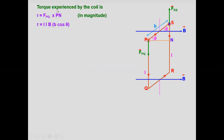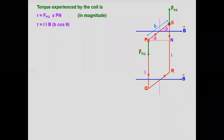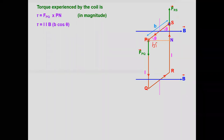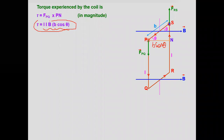Torque is defined as force into perpendicular distance. Force on PQ acts in one direction, and the perpendicular distance is PN. From geometry, in triangle PSN, this perpendicular distance equals b·cos θ. Substituting: torque = force × perpendicular distance = ILB × b·cos θ. Now, L × b is the area of the coil. So the value of torque becomes τ = IAB cos θ.